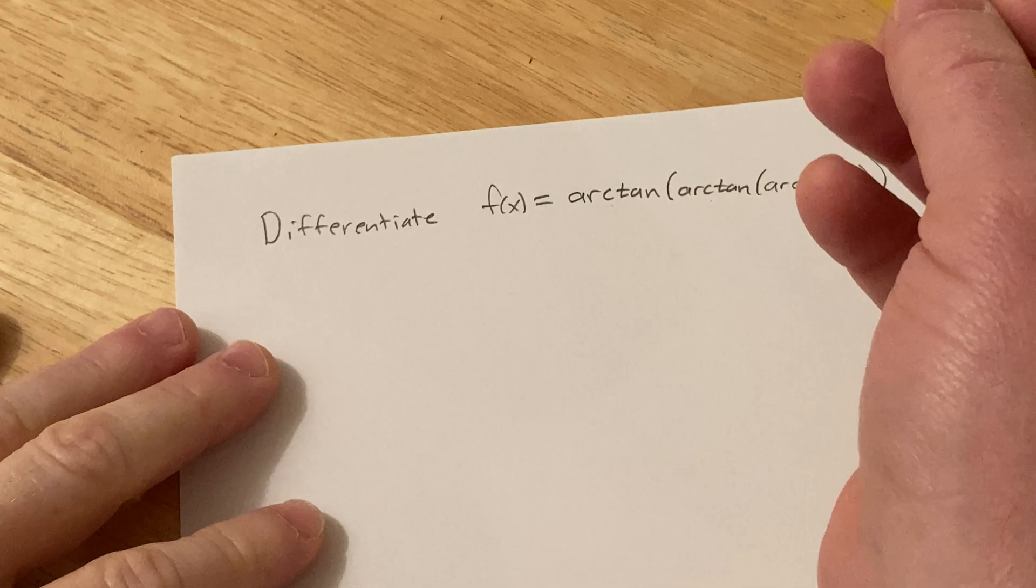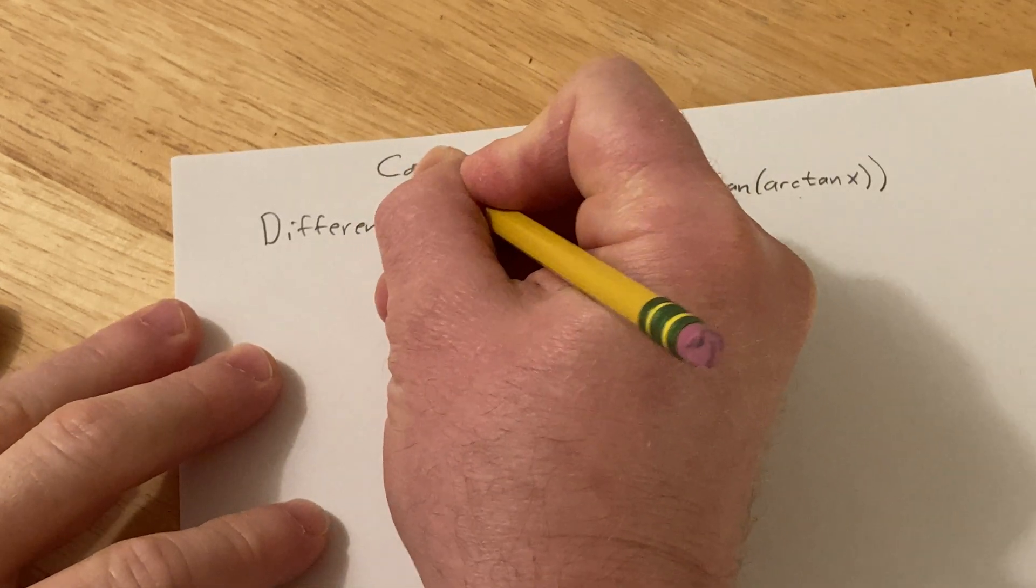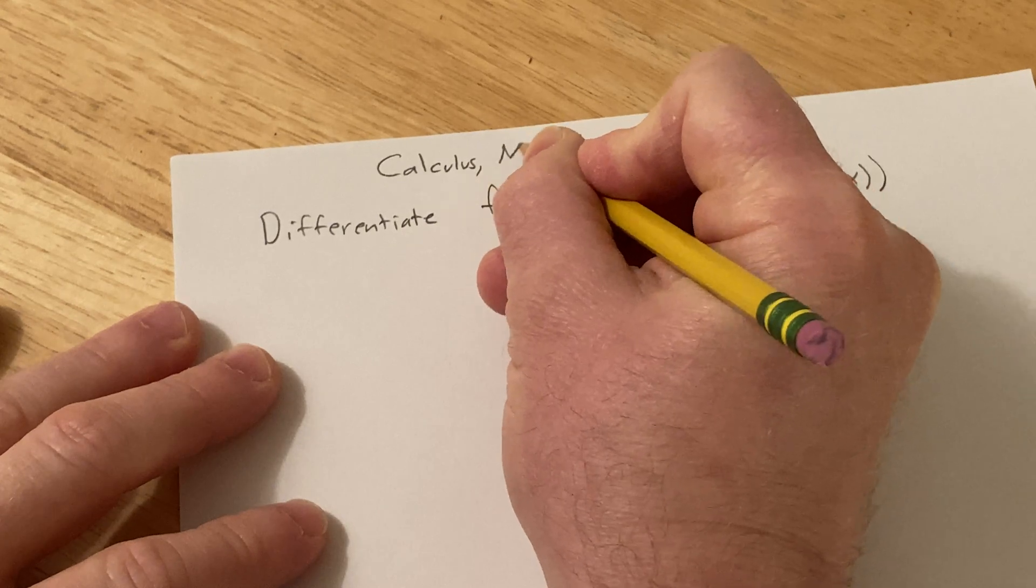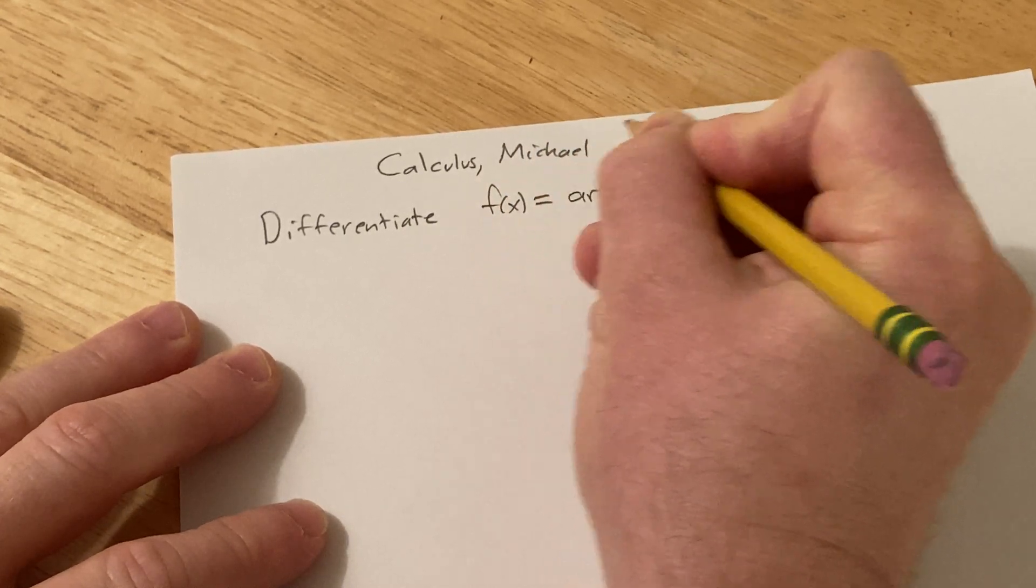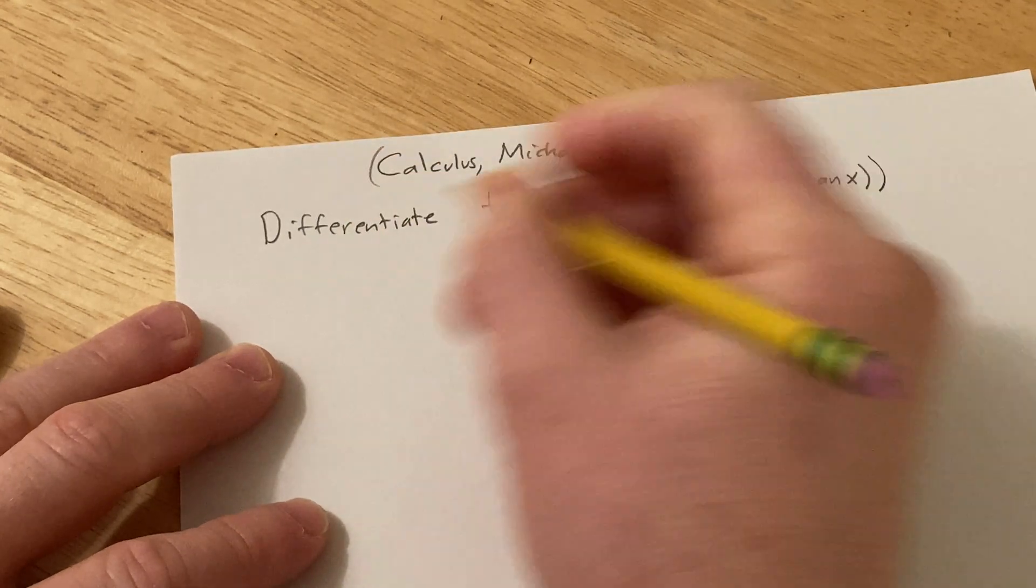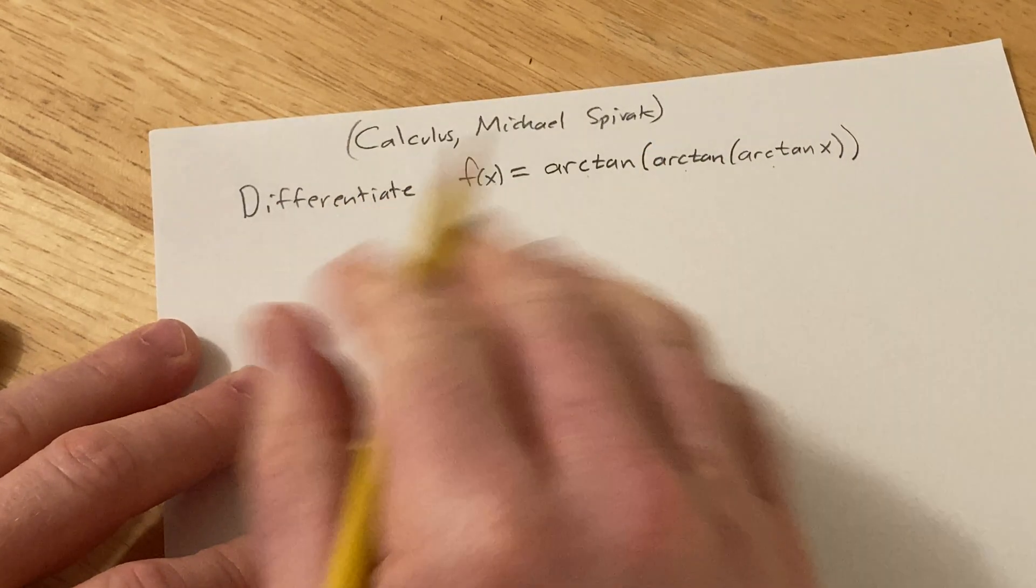And this is a problem from a very famous book. The book is called Calculus and it is by Michael Spivak. Really fun book. It's got all kinds of really cool exercises and it reads really well.